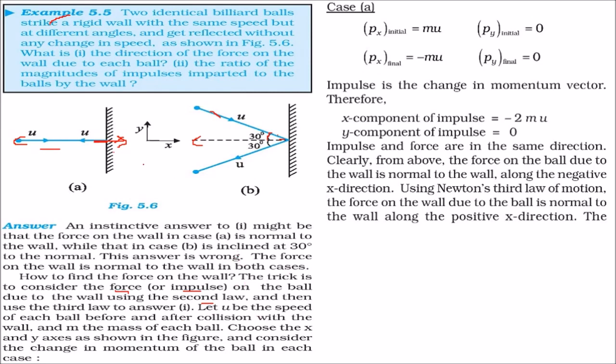Means, let us say that U is the speed of each ball before and after collision because the speed is not changing. And M is the mass of the wall, say M is the mass of each ball.